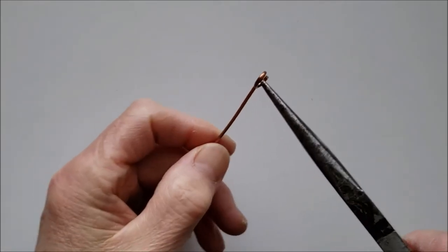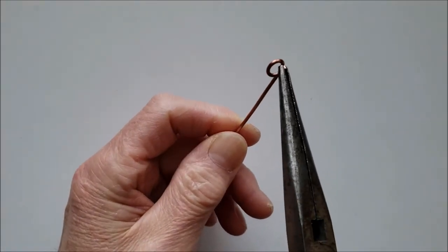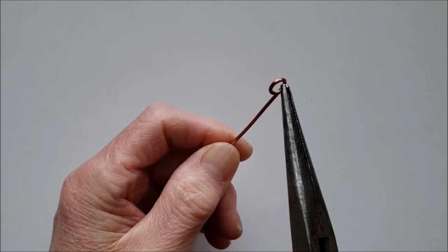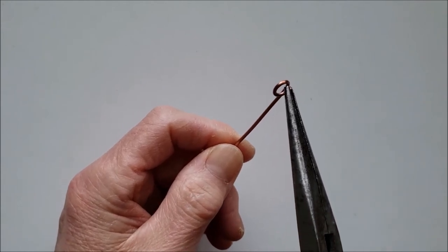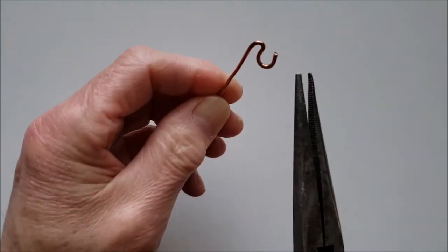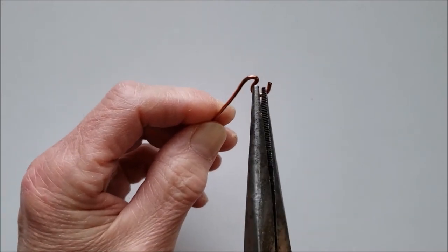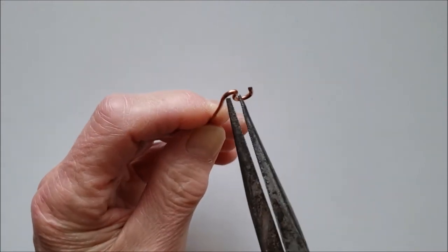Bend one end of a 10 centimeter piece of 1.6 millimeter wire into a loop. Bend another piece of 1.6 millimeter wire into an open loop for the second post.